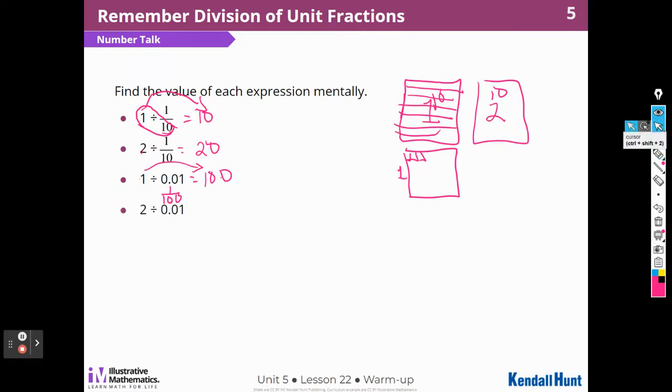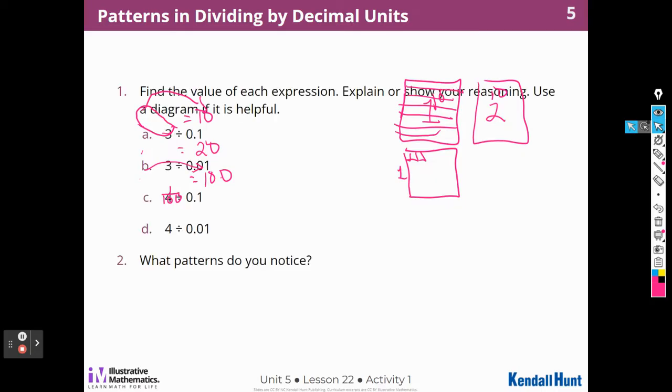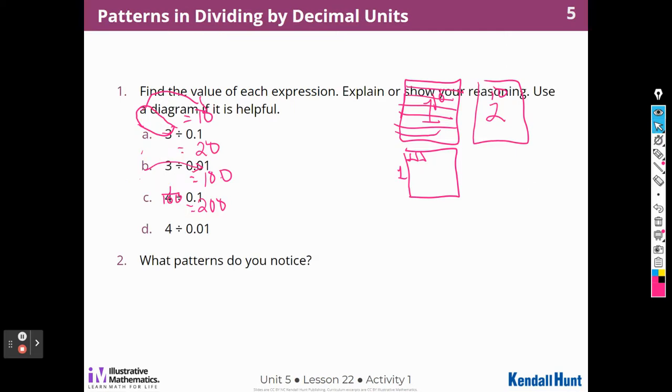And then 2. Well, it stands to reason if there are 100 hundredths in 1, there are going to be 200 dividing 2 by hundredths. There are twice as many hundredths in two wholes. Let's see what they ask us about these problems. Oh, they didn't ask us anything. Let's move on then.